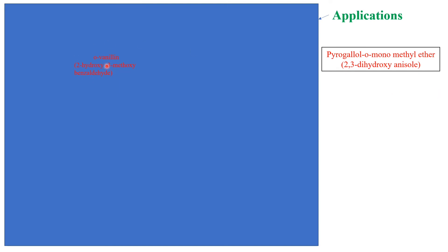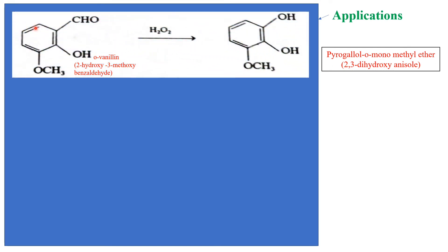Next are the applications; there are three. The first is the conversion of ortho-vanillin — that is 2-hydroxy-3-methoxybenzaldehyde — into 2,3-dihydroxyanisole, otherwise called pyrogalol ortho-monomethyl ether. By treating with alkaline H₂O₂, the aldehyde group is converted to a hydroxy group, giving 2,3-dihydroxyanisole. The name 'anisole' is the parent when two hydroxy groups are added. In pyrogalol, a hydrogen is replaced by a methyl group, hence it is called pyrogalol O-monomethyl ether.